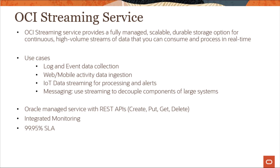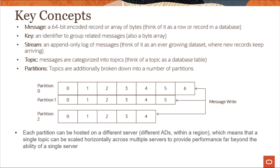The service provides a 99.95% SLA on availability. Partitions allow you to distribute streams by splitting messages across multiple nodes, which enables you to scale your streaming service. Each partition can be placed on a separate machine to allow multiple consumers to read a stream in parallel, and these consumers can read from any partition regardless of where it is hosted. A consumer can read messages from one or more streams, and each message within a stream is marked with an offset value, so if there is an interruption, the consumer can pick up where it left off.